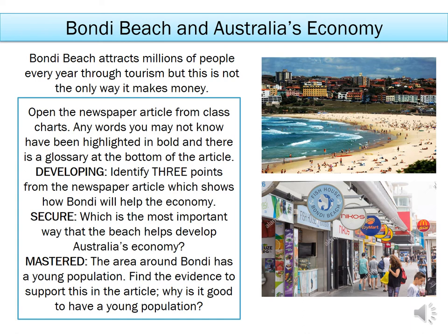Moving into grades 5 and 6, think about what is the most important way that the beach helps develop Australia's economy. For example, tourism is good, but will it last forever? Or is there another industry that might make money in the longer term? And then for grade 7 and above, the area around Bondi has a really young population. Find the evidence to support this in the article and explain why it is good to have a young population living in your area. Try to link this to employment.